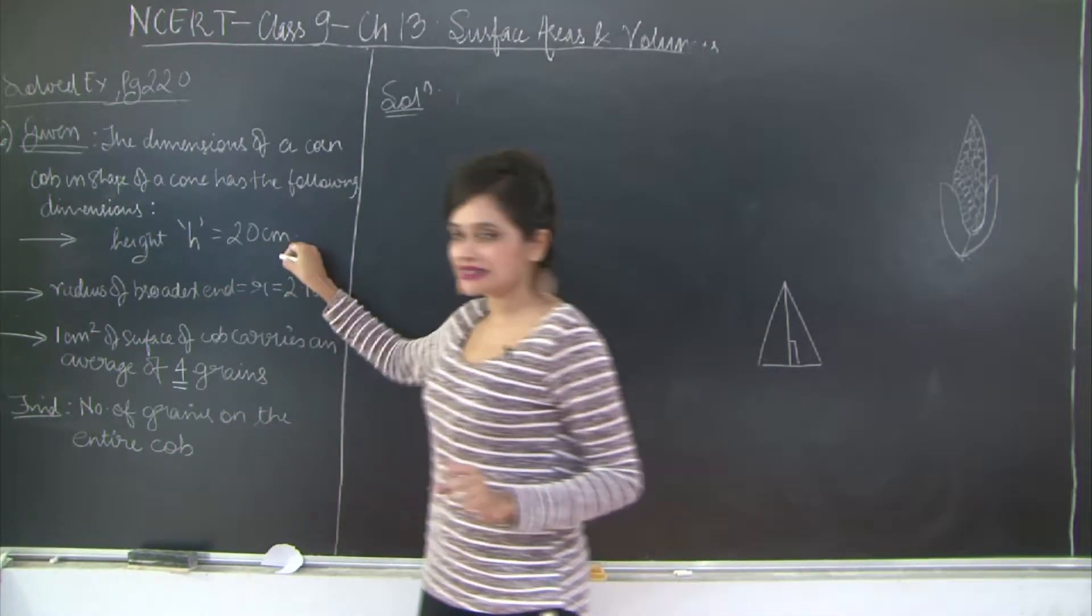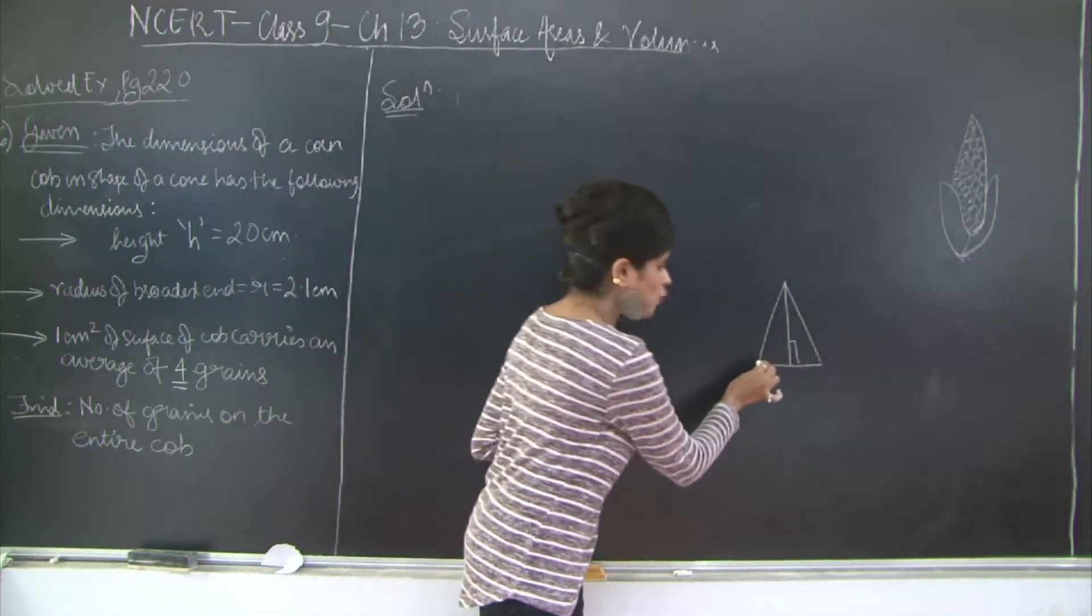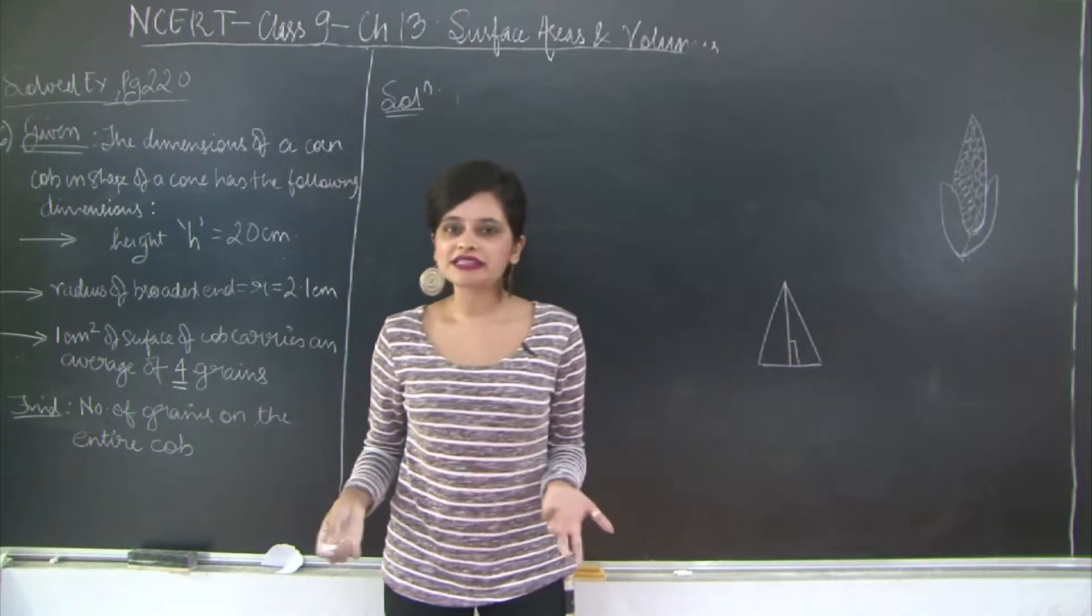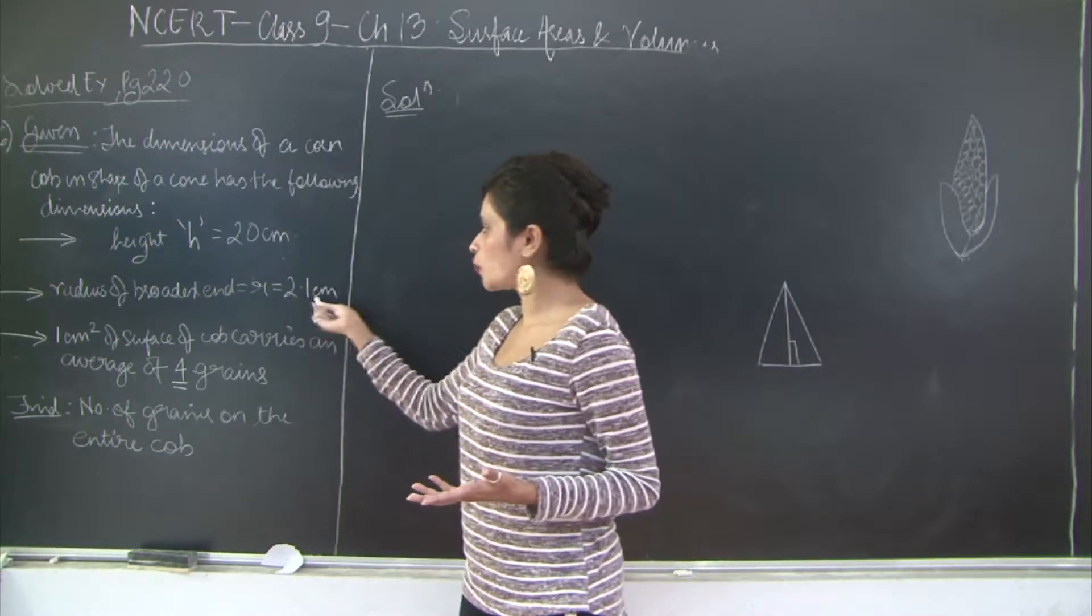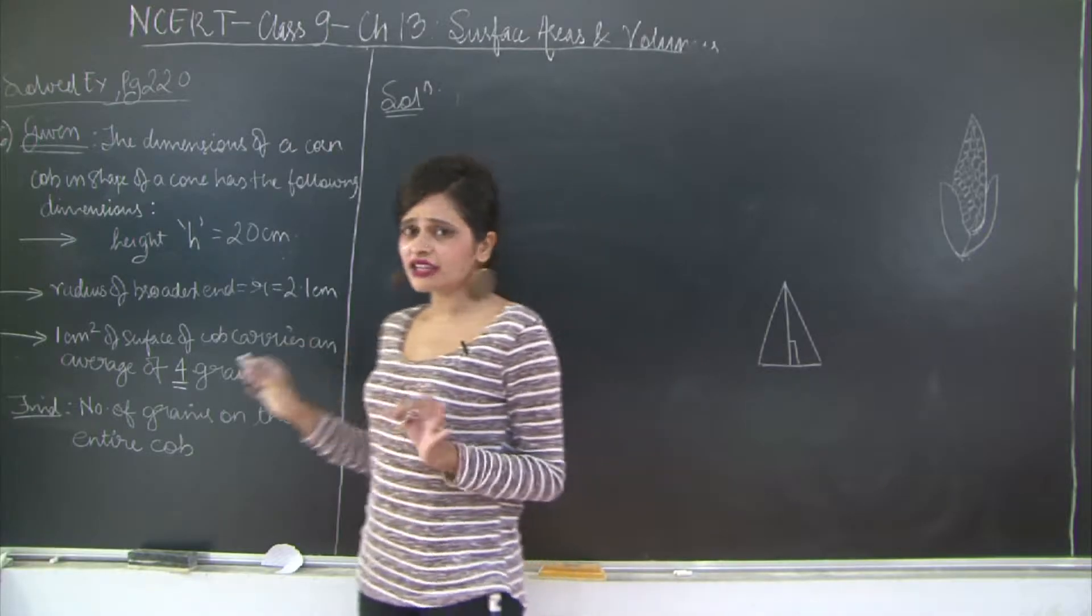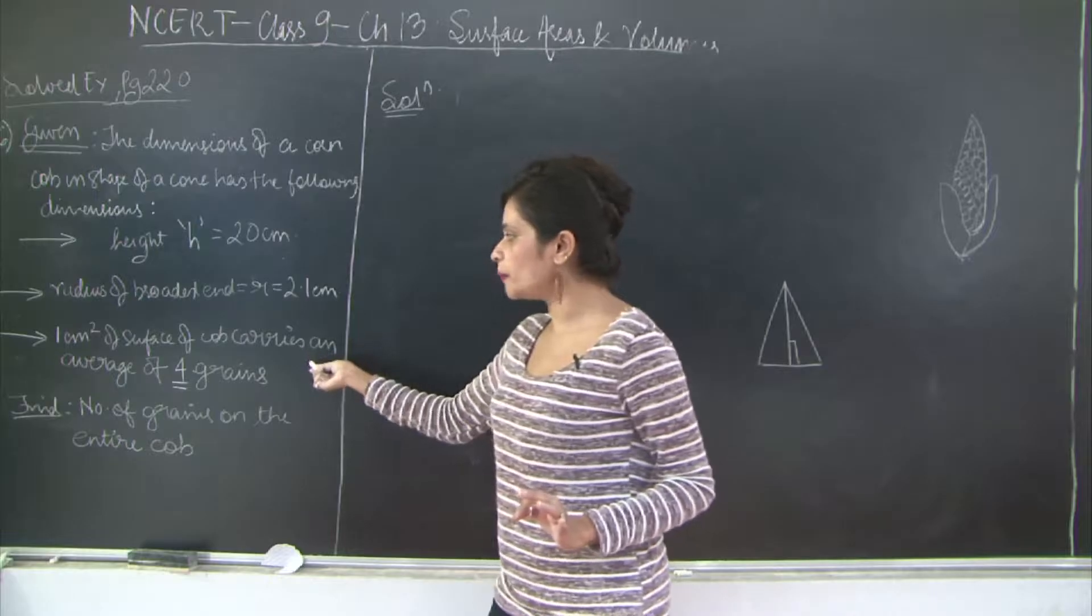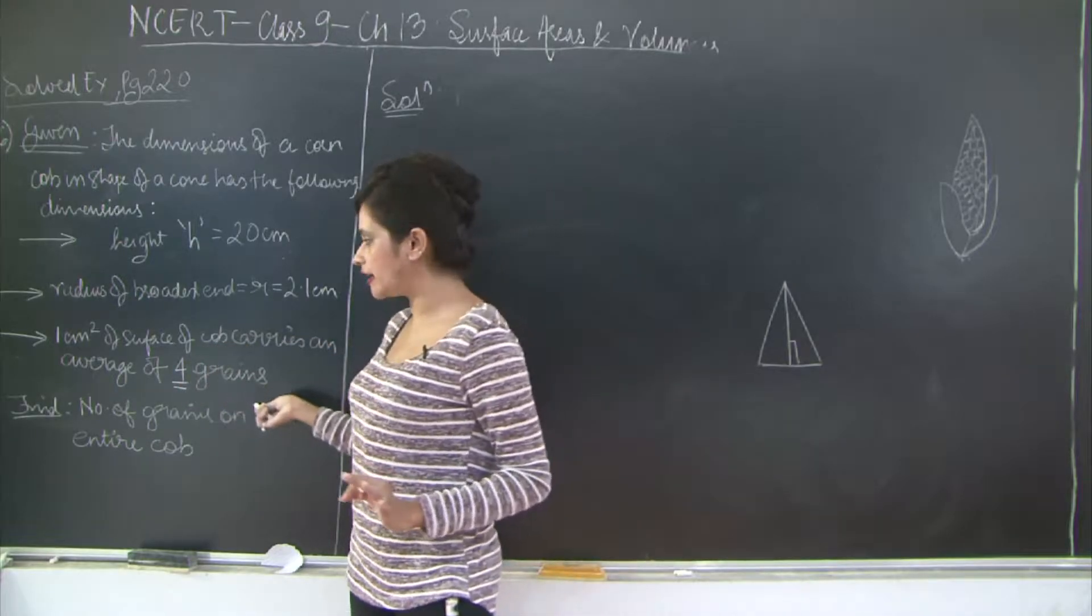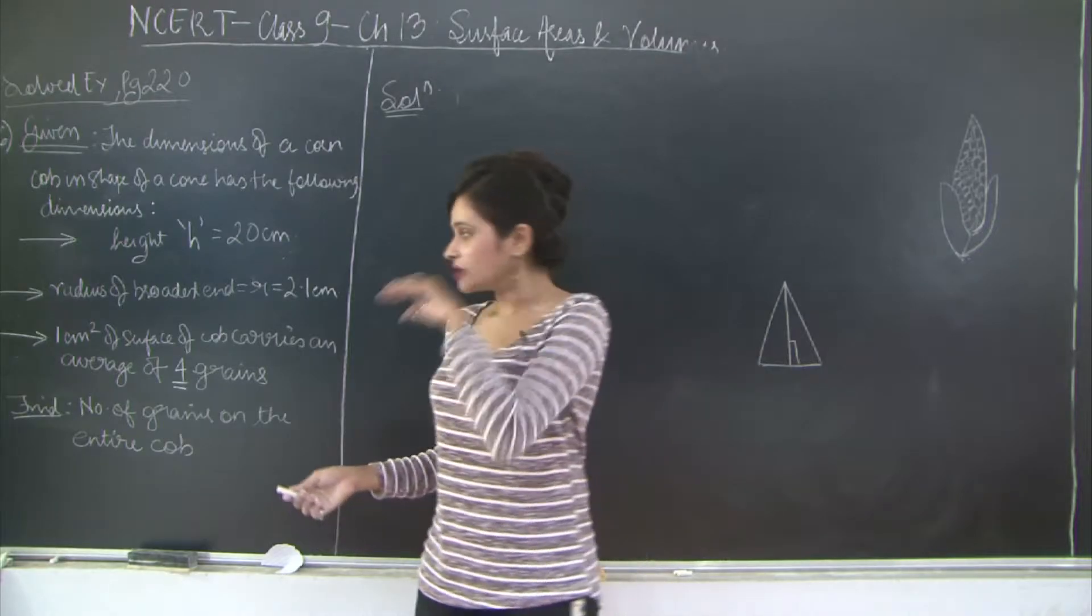So the height is 20 cm, radius of the broadest end - the base of the cone - is 2.1 cm. It also says that 1 cm² of surface of the cob carries an average of 4 grains. You need to find the number of grains on the entire cob.